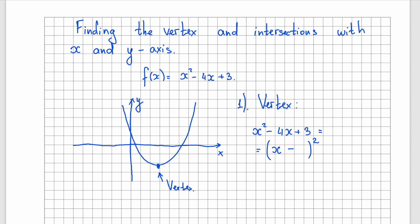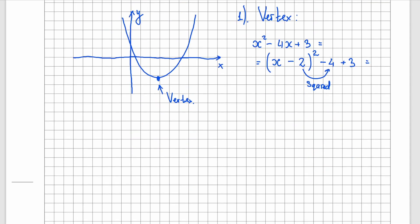I have a half of b, which is negative 2. Outside I will have to take away that number squared, which is 4. And don't forget to copy 3. So as a result, we got that x squared minus 4x plus 3 equals to x minus 2 squared minus 1.